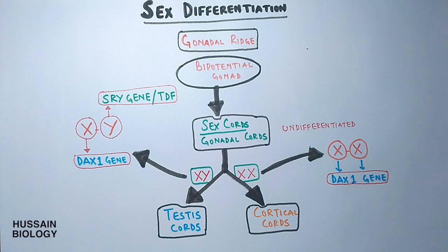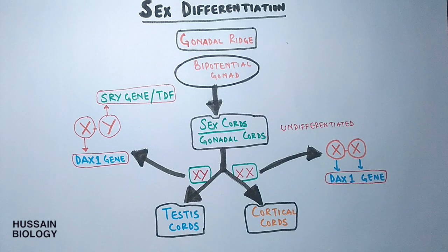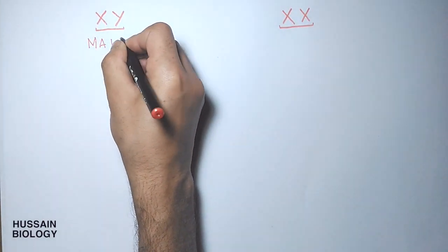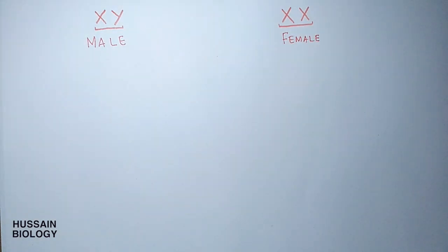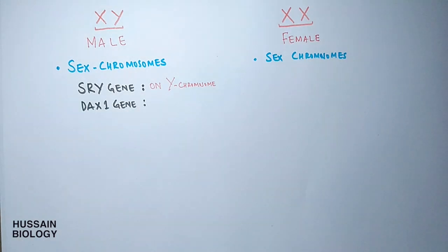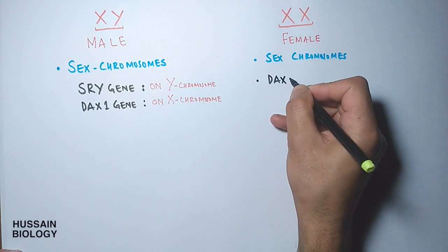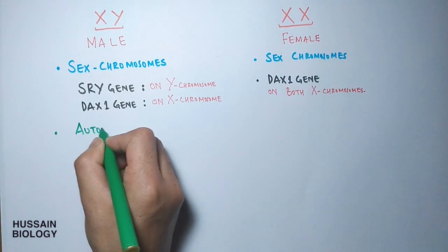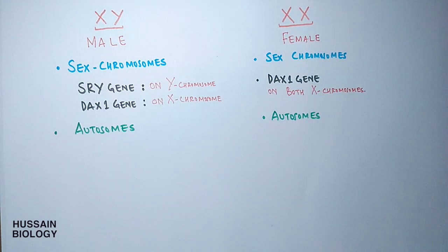These sex chromosome genes are only one side of the story, because not only sex chromosomes but also a majority of autosomes drive sex differentiation in humans. We will now look at both conditions — XY as male and XX as female — examining both sex chromosome genes and the autosomal genes involved.